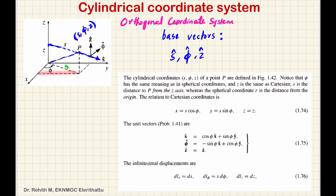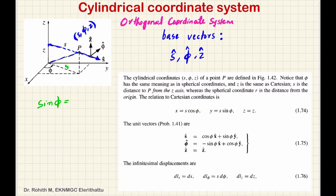Now, here is a right-angled triangle. This is the triangle with a 90-degree angle. Now, phi is the angle at the origin. Suppose we are finding sin(phi): sin(phi) equals the y coordinate divided by the hypotenuse. So, opposite side by hypotenuse gives y equal to s·sin(phi).